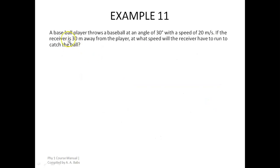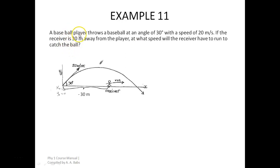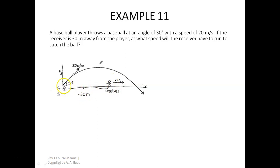Let's solve the second question. A baseball player throws a baseball at an angle of 30 degrees with a speed of 20 meters per second. If the receiver is 30 meters away from the player, at what speed will the receiver have to run to catch the ball? Imagine the baseball player standing here, throwing the ball at 20 m/s at 30 degrees — the ball travels and falls down. The receiver is standing 30 meters away from the player before the throw.